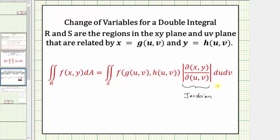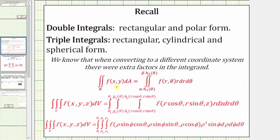We've actually seen this before when we converted double integrals from rectangular to polar form. Remember when converting a double integral from rectangular to polar form, dA was equal to r dr dθ. So the integrand has an extra factor of r, which is the Jacobian when performing this transformation.